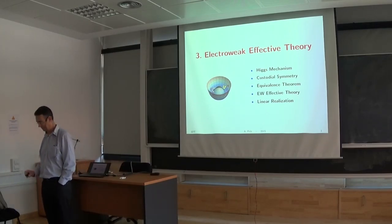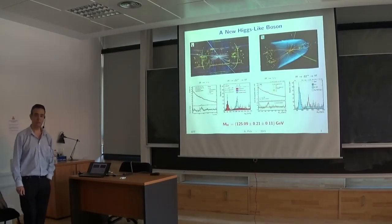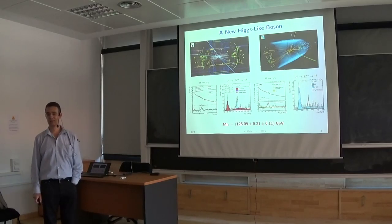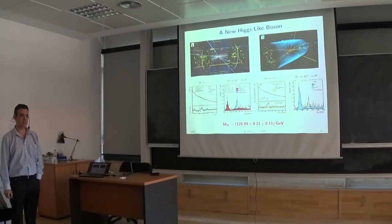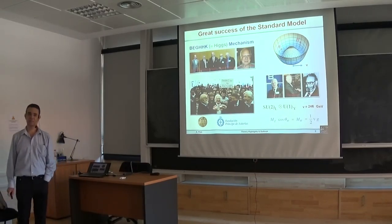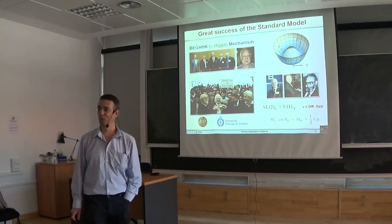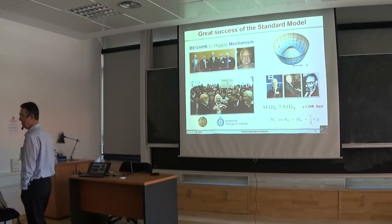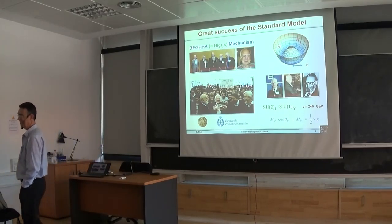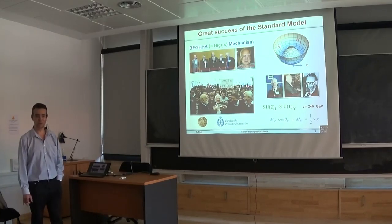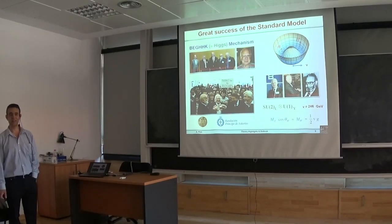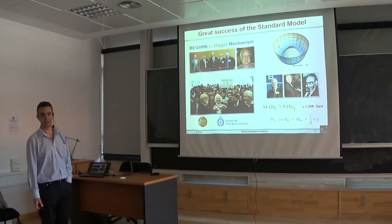If you understand that, then there are many things you can get the result for without doing any difficult calculation. So everybody knows what is going on: the Higgs has been discovered, and now we know precisely the mass, we know that it is a boson, we know it has all the properties that the standard model was predicting. So it's a great success of the standard model.